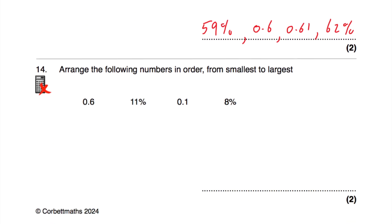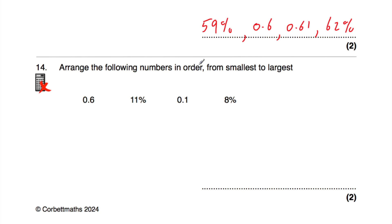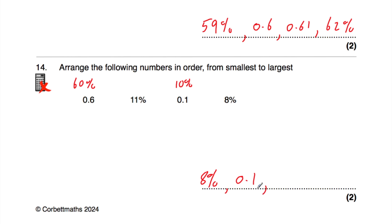Question number fourteen also asks us to put numbers in order from smallest to largest. Let's write them all as percentages: 11%, 8%, 0.1 is 10%, and 0.6 is 60%. So the order is: 8% first, then 0.1 (which is 10%), then 11%, and the biggest is 0.6 (which is 60%). So those numbers are written in order from smallest to largest.